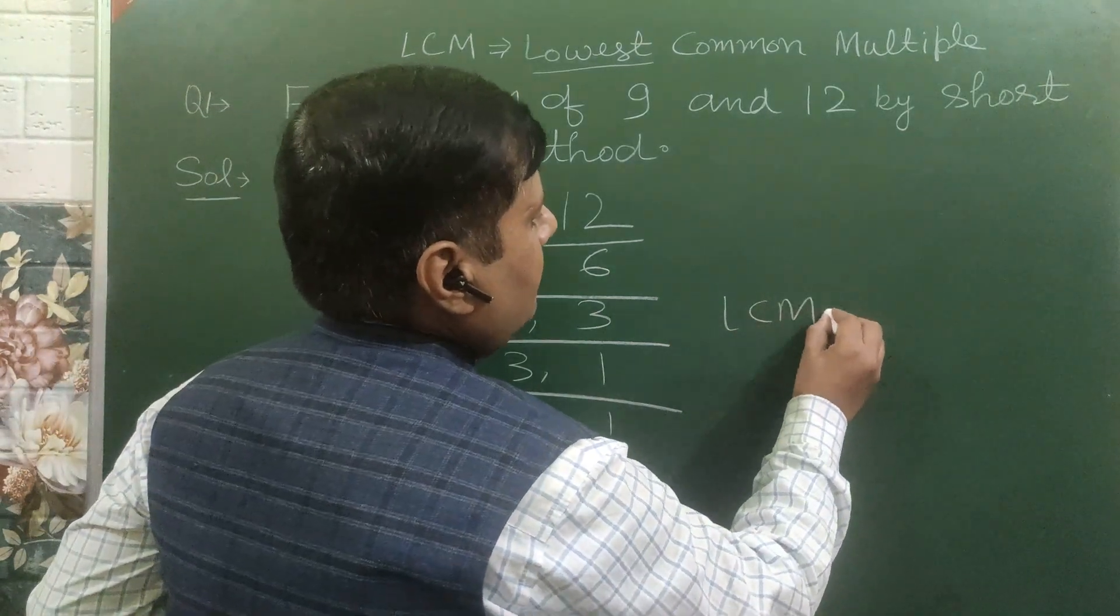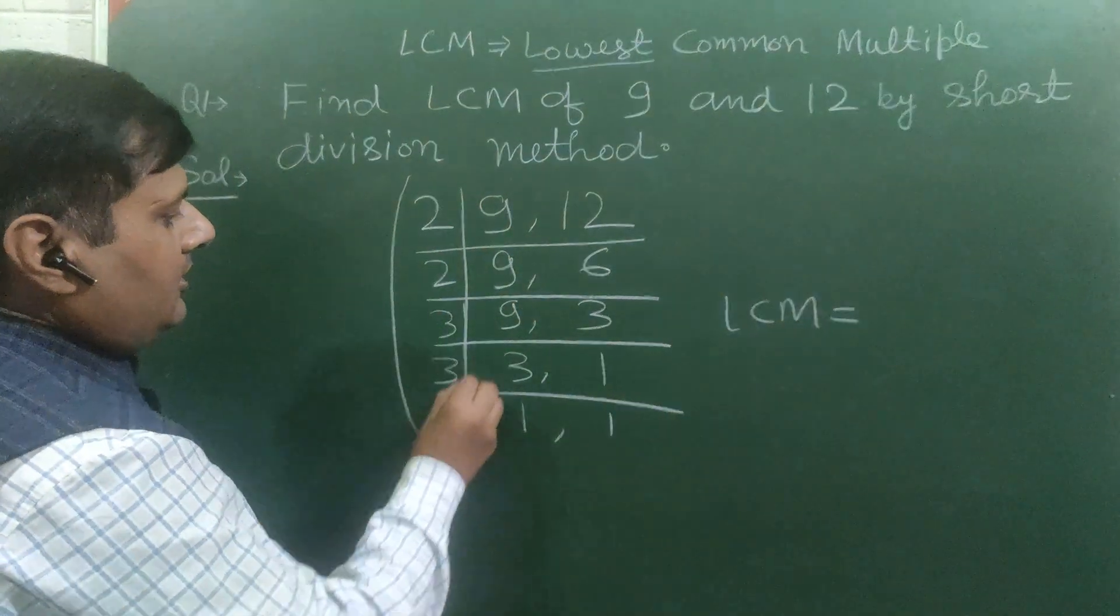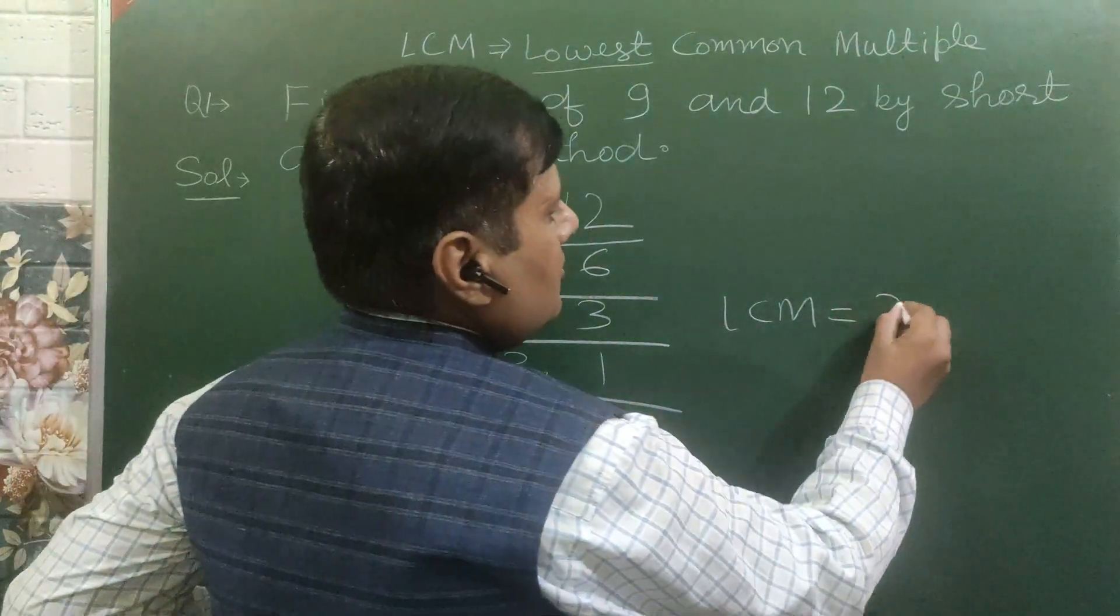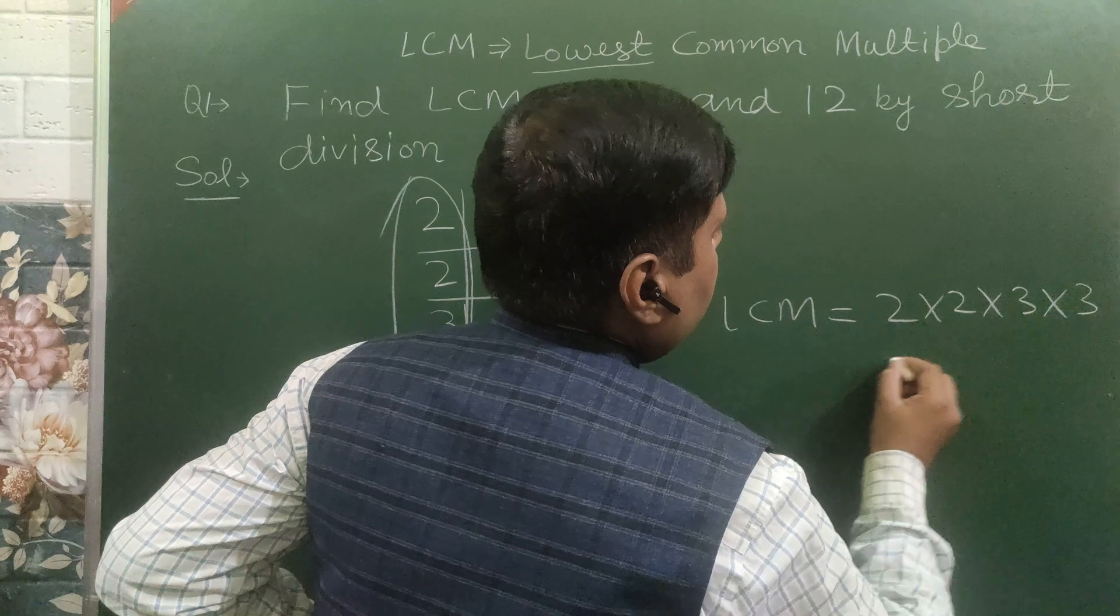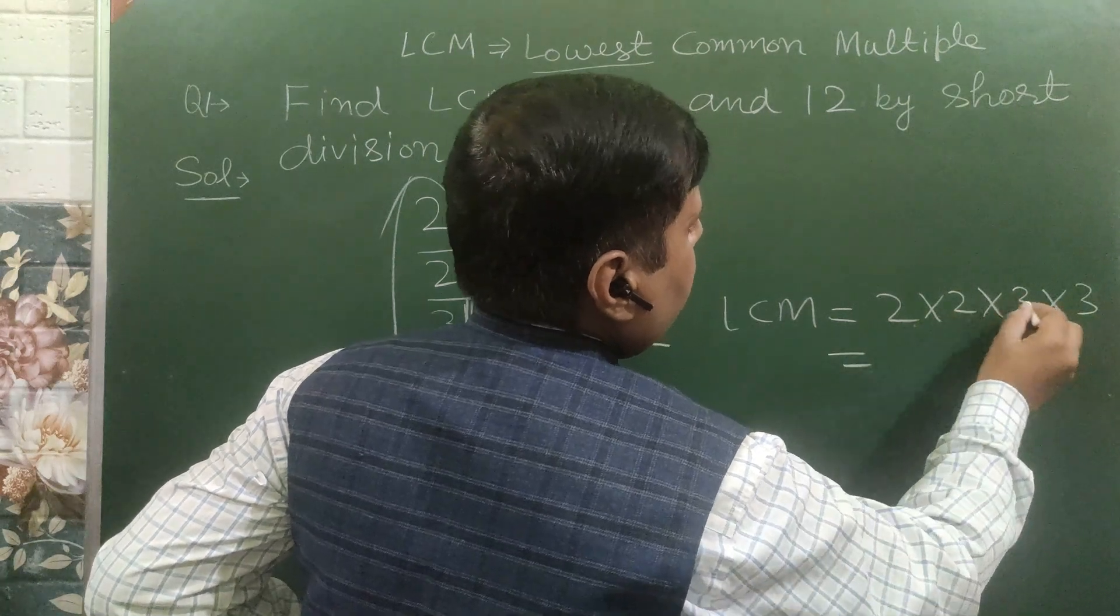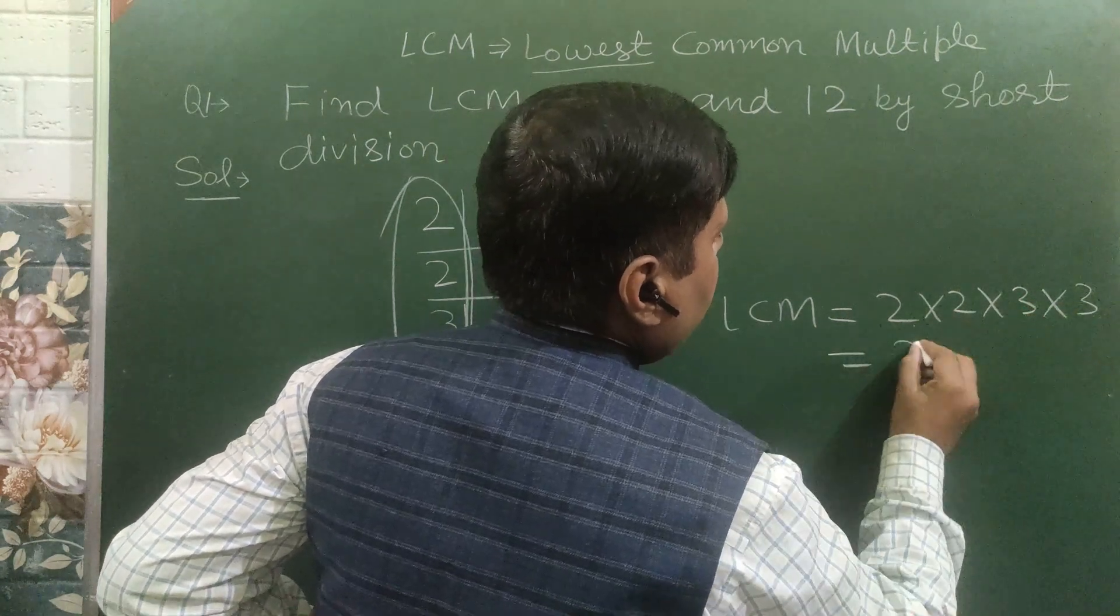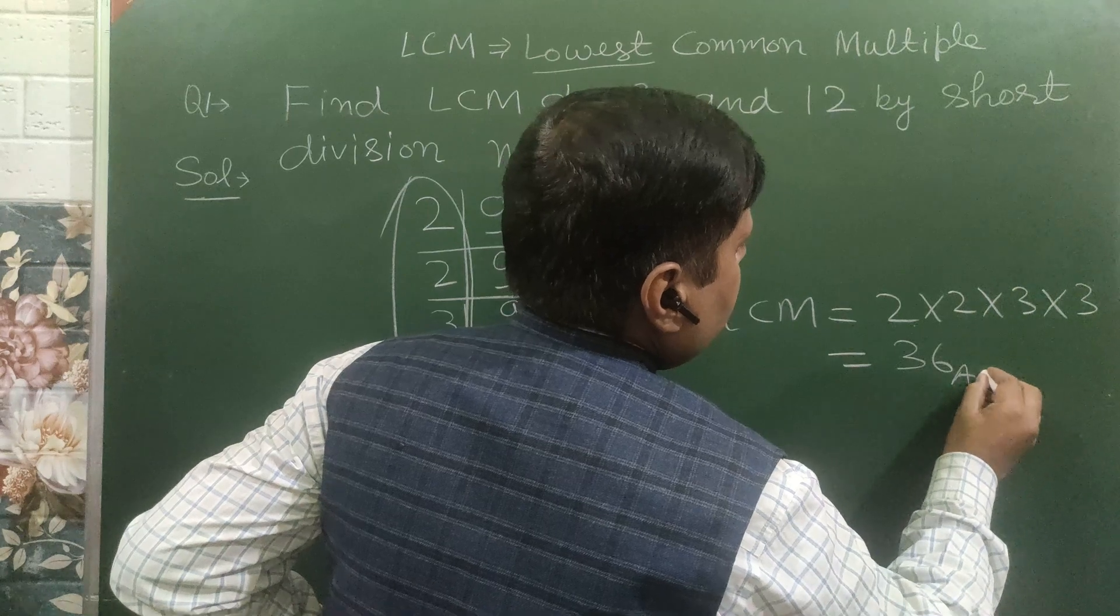Now LCM, you write all the factors: 2 into 2 into 3 into 3. 2 twos are 4, 4 threes are 12, 12 threes are 36. So our answer is 36.